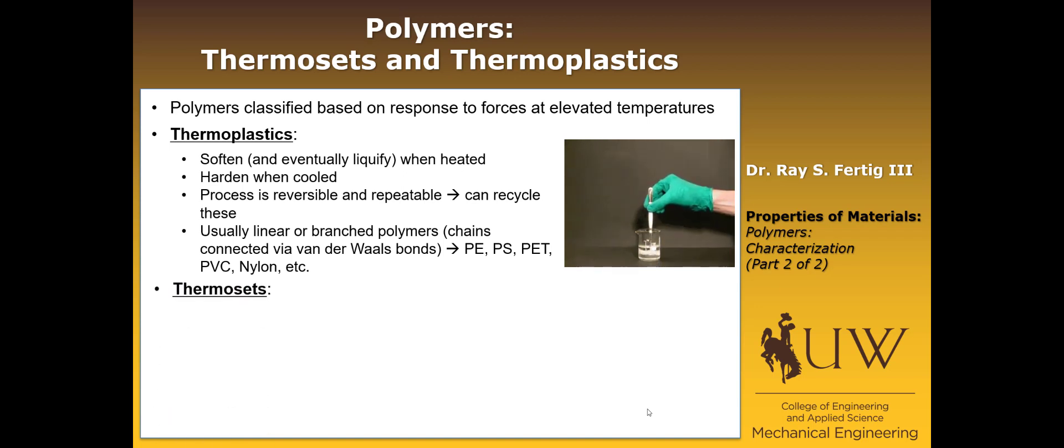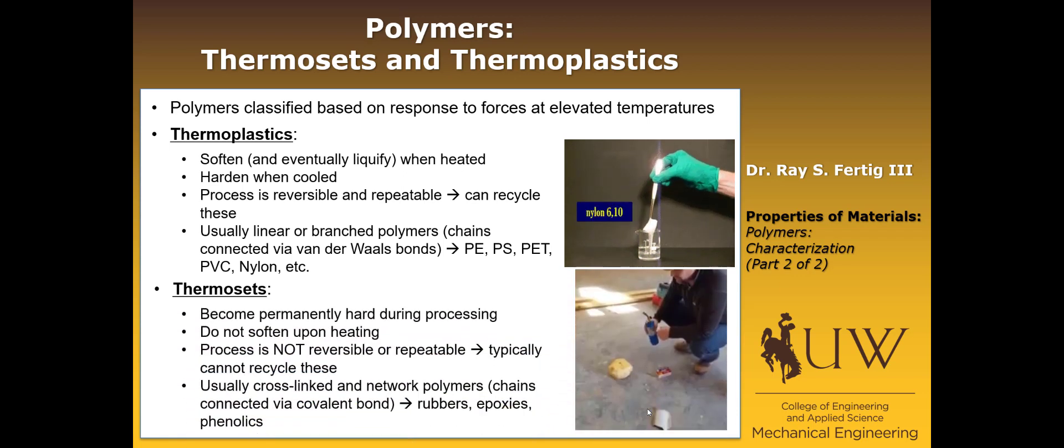Now, thermosets, in contrast, are pretty much the opposite. So they are going to become permanently hard during processing. They don't soften up during heating. And you can't recycle them because you can't reverse or repeat the process. And the reason for this is that they're usually cross-linked and networked polymers. And so unlike the easy-to-break van der Waals bonds, these chains are bonded together by covalent bonds, which don't break readily and certainly don't break and form a liquid and then reform easily.